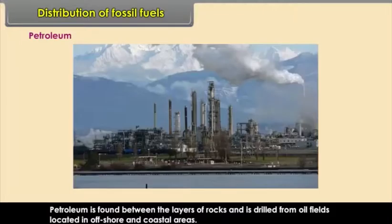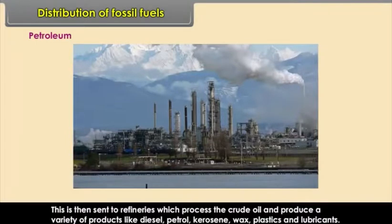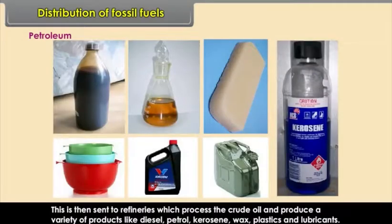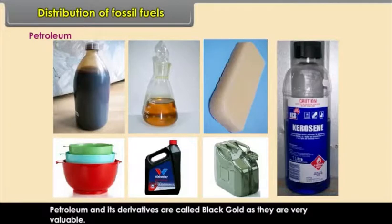Petroleum is found between the layers of rocks and is drilled from oil fields located in offshore and coastal areas. It is then sent to refineries which process the crude oil and produce a variety of products like diesel, petrol, kerosene, wax, plastics and lubricants. Petroleum and its derivatives are called black gold as they are very valuable.